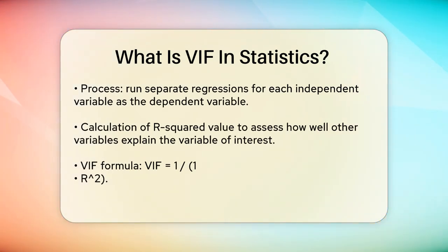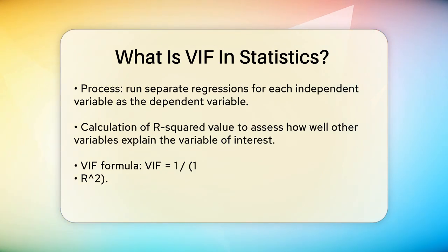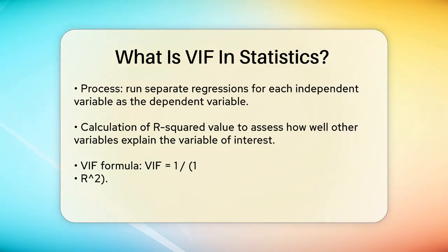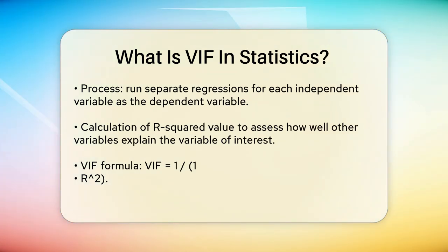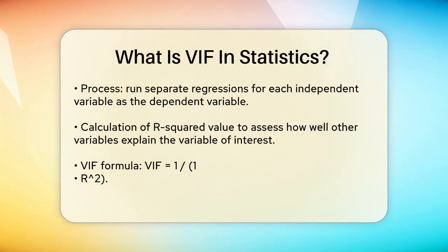Here's how it works. For each independent variable in your model, you run a separate regression where that variable is the dependent variable and all the other independent variables are the predictors. You then calculate the R-squared value from this regression, which tells you how well the other variables explain the variable you're looking at. The VIF formula is simple: VIF equals 1 divided by (1 minus R-squared), where R-squared is the unadjusted coefficient of determination from that separate regression.